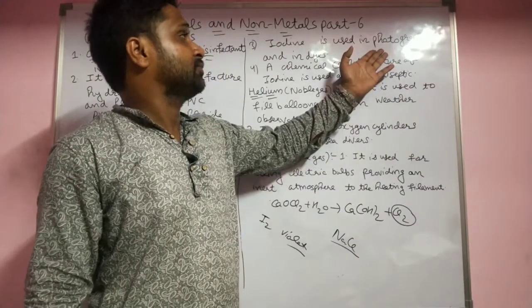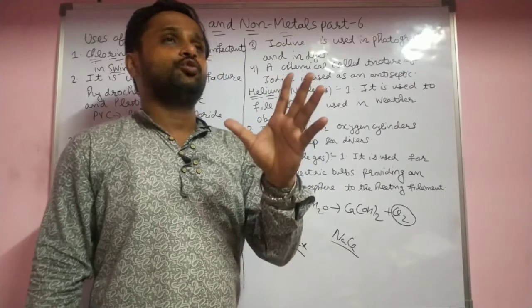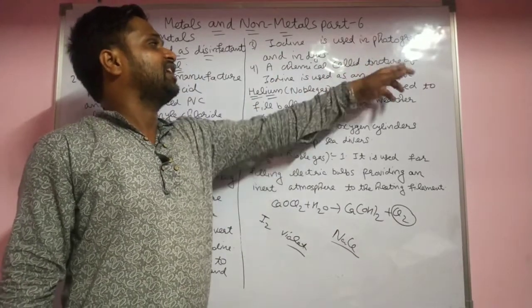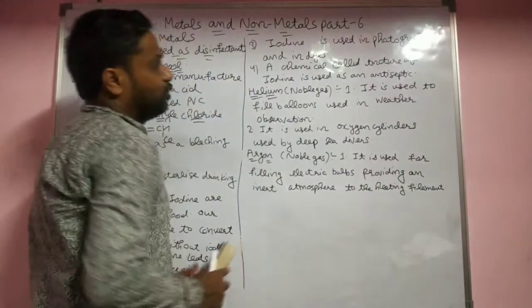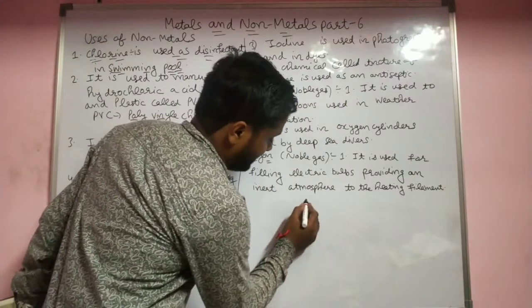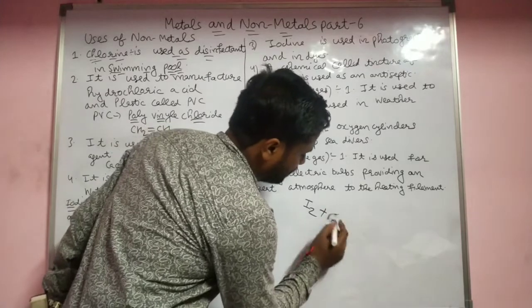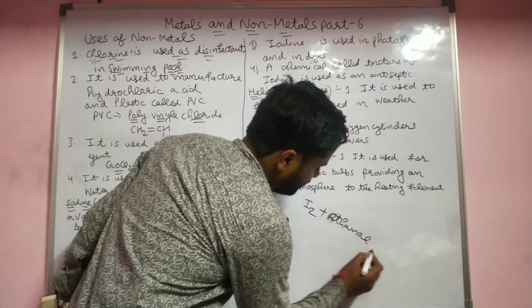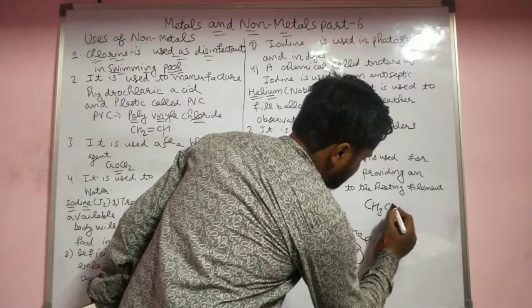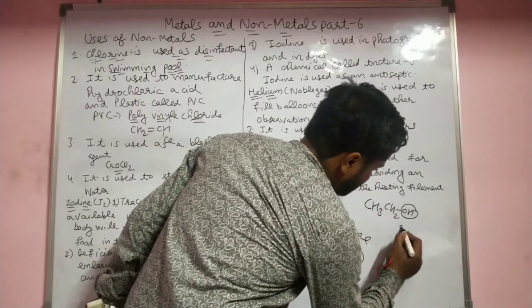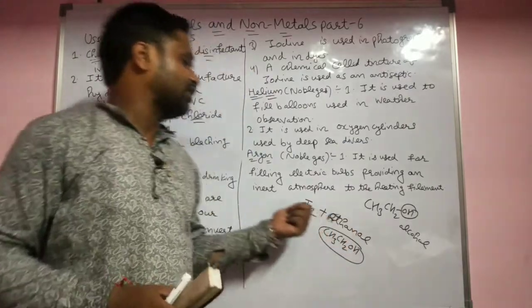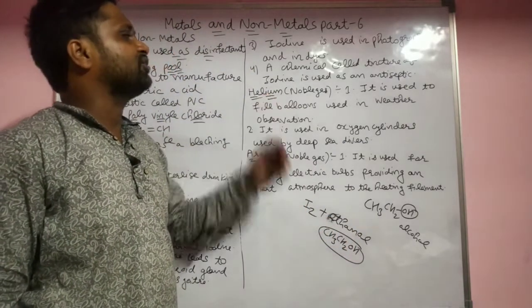Iodine is also used in photography — iodine crystals are used in photographic film. Iodine is also used in dyes. The chemical called tincture iodine is used as an antiseptic on wounds. Tincture iodine is a mixture of iodine and ethanol (CH3CH2OH — ethanol has an OH alcohol group).